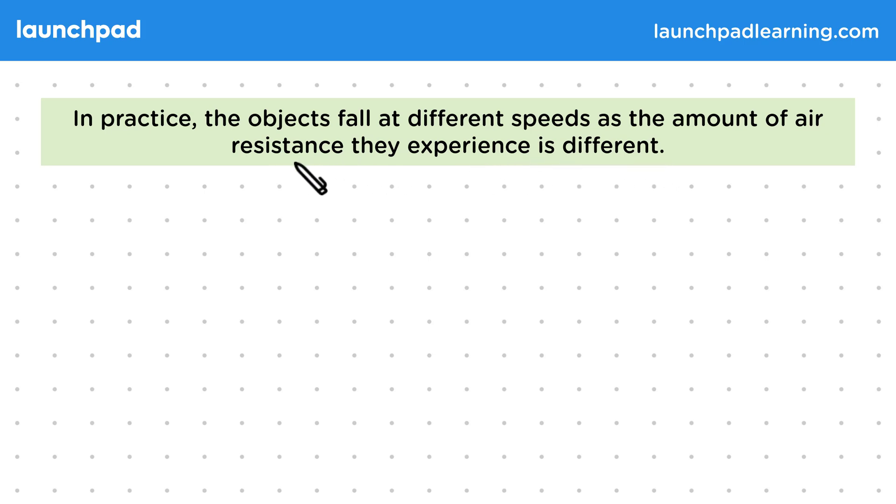Now air resistance is a resistive force caused by collisions with air molecules. There are many factors which determine how strong it is, such as the shape of an object. Now let's consider doing the experiment again, but this time with a feather and a rock.